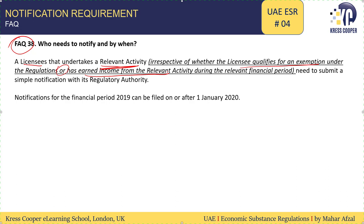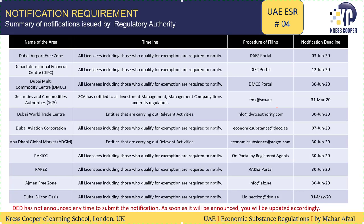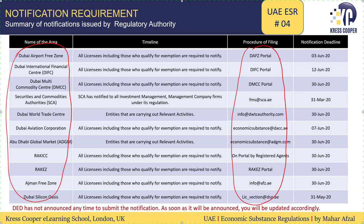Notification for the financial period 2019 is to be filed on or after 2019. The time, form, and manner of the notification will be decided by the respective regulatory authority. We have prepared a summary of notifications issued by different regulatory authorities — some are asking for notification through the portal, some through email. We need to honor the timeline as given by the respective regulatory authority.